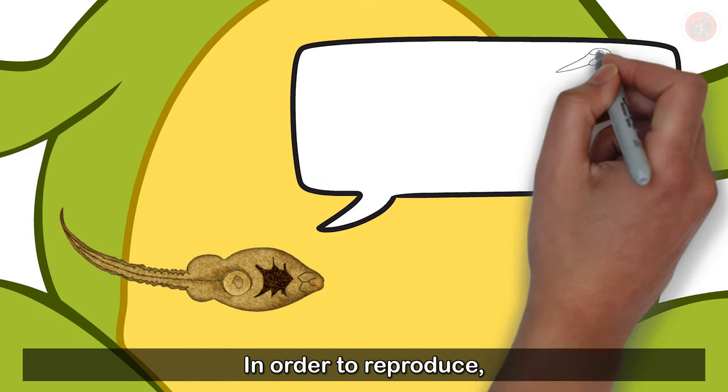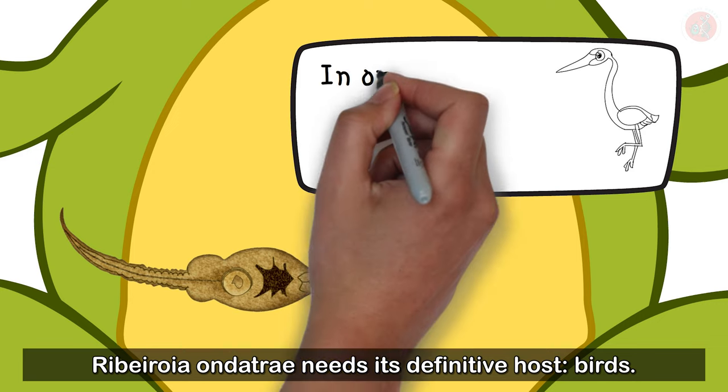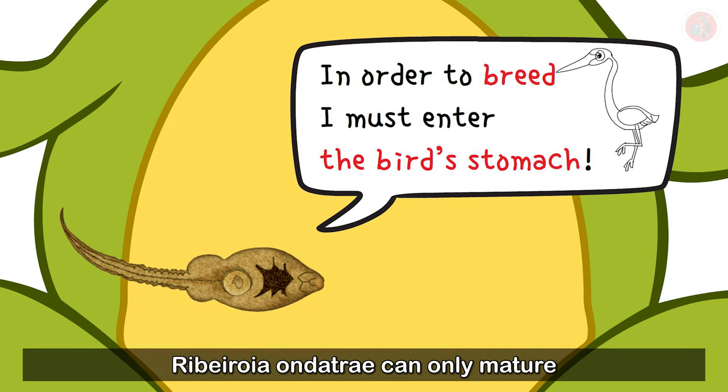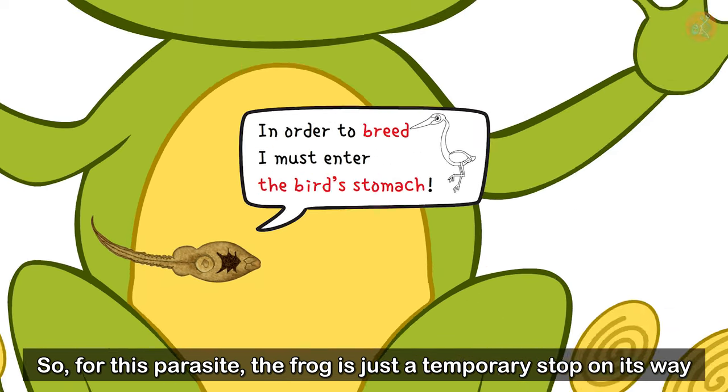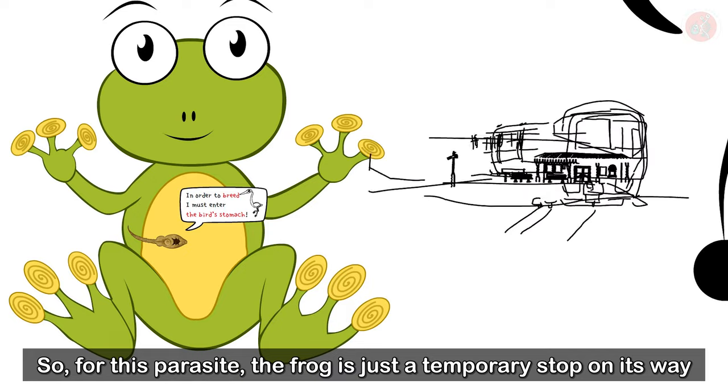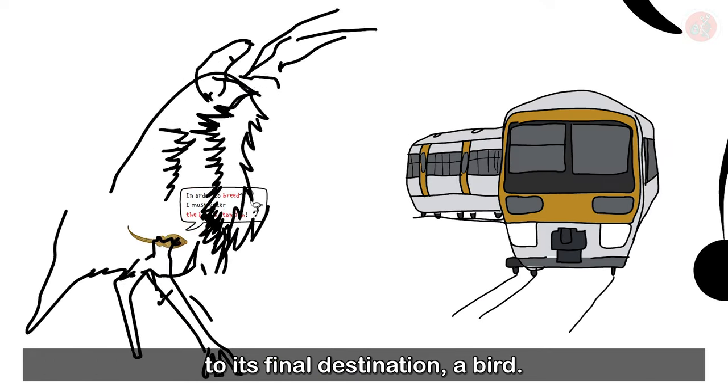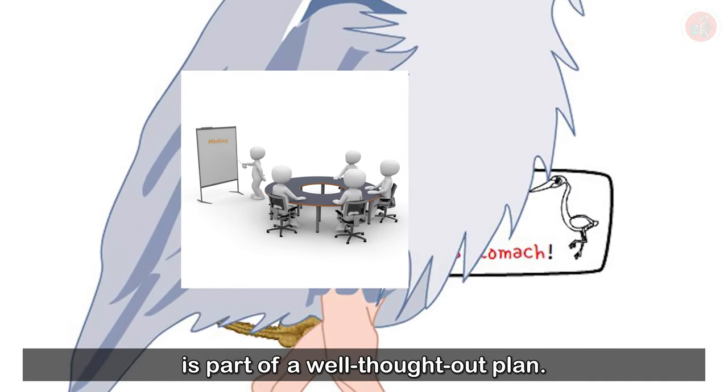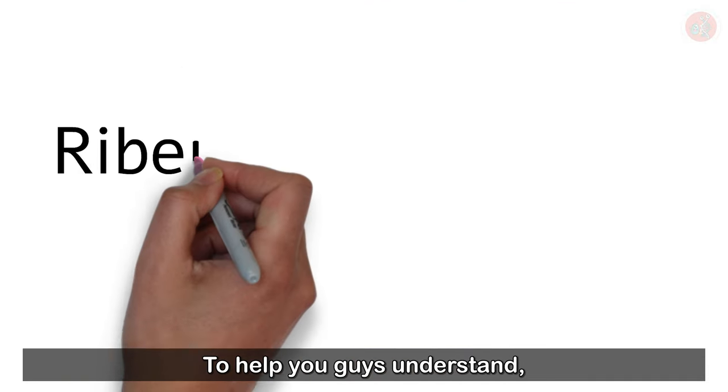It helps with its reproduction. In order to reproduce, Ribeiroia ondatre needs its definitive host, birds. Ribeiroia ondatre can only mature and lay its eggs within a bird's stomach. So for this parasite, the frog is just a temporary stop on its way to its final destination, a bird. You could say that deforming the frog's legs is a part of a well-thought-out plan.